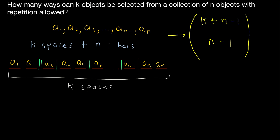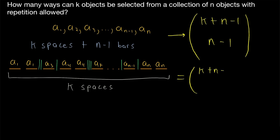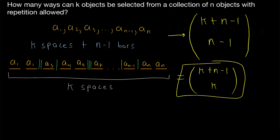But it gets even better. By the symmetric property of binomial coefficients — I'll leave a link in the description to a proof of that property — k plus n minus 1 choose n minus 1 is equal to k plus n minus 1 choose k, which I think you'll agree is a bit nicer. So the number of ways that k objects can be selected from a collection of n objects with repetition allowed is k plus n minus 1 choose k.